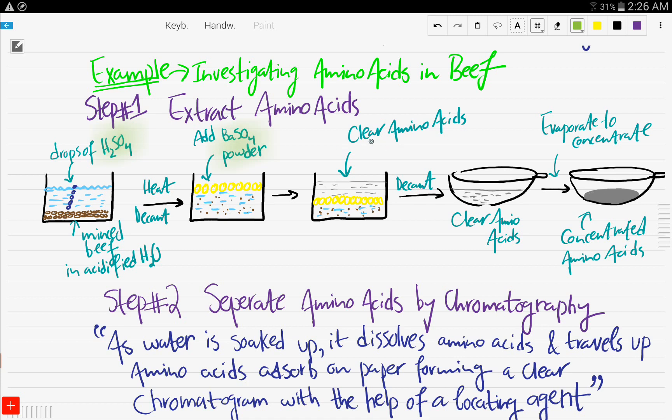So here, as you can see, is clear amino acids. Now decant these, we need the clear amino acids in an evaporating dish and again, evaporate to concentrate and you get concentrated amino acids.